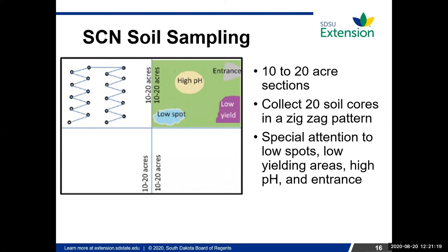You can also do spot or targeted samples — pay special attention to low areas of the field, lower-yielding areas, areas with high pH, field entrances, and areas near fences, because SCN can move anywhere that soil can move. Send those samples to the diagnostic clinic for review.